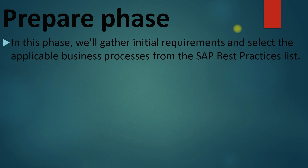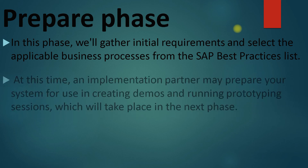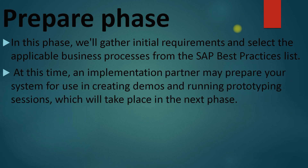The next phase is the Prepare phase, where SAP Activate methodology actually starts. In this phase, you gather initial requirements — an overall picture of what your customer needs. You then check those requirements against SAP best practices: what is in the standard system and where you can map the business process to SAP processes.